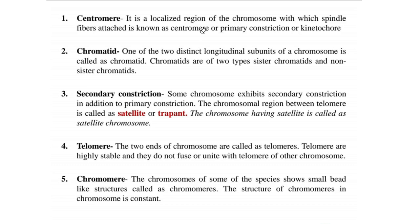Some chromosomes exhibit a secondary constriction in addition to the primary constriction. The chromosomal region between the secondary constriction and the telomere is called the satellite, also known as the trabant. The chromosome having a satellite is called a satellite chromosome. The two ends of chromosomes are called telomeres, which are highly stable and do not fuse with telomeres of other chromosomes.